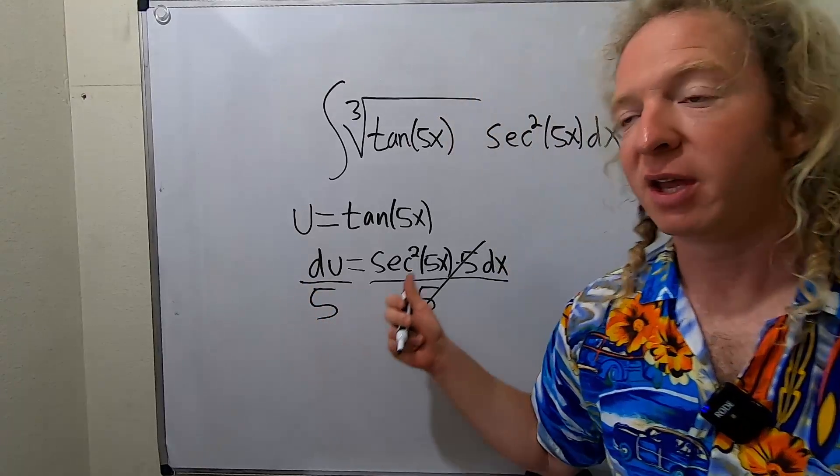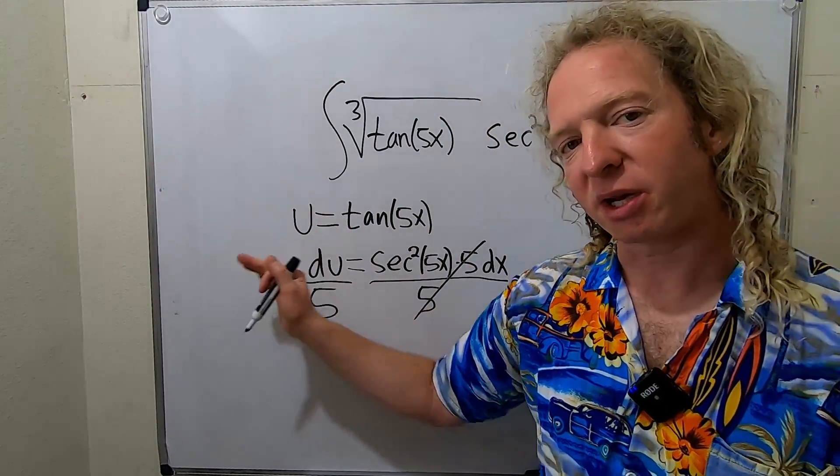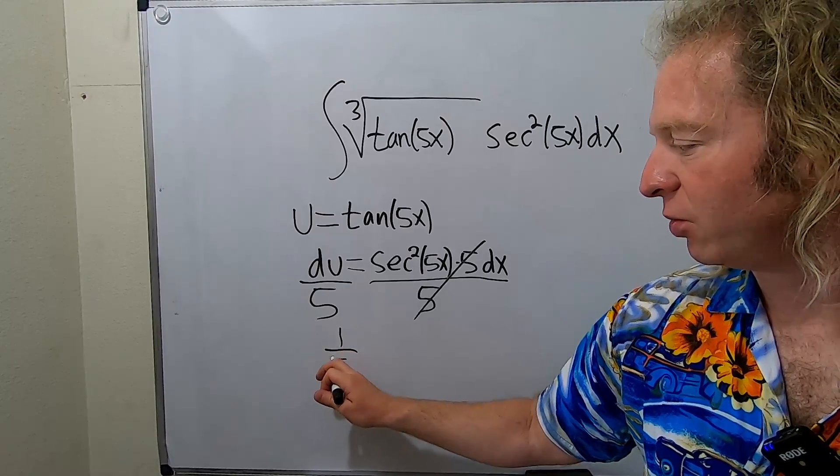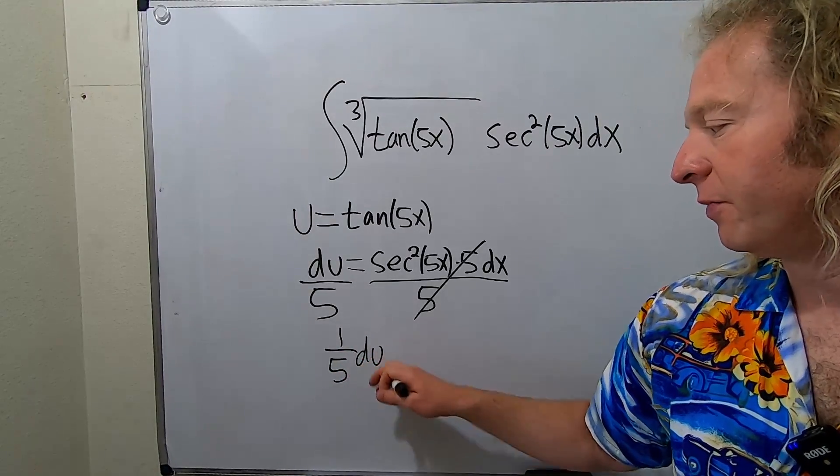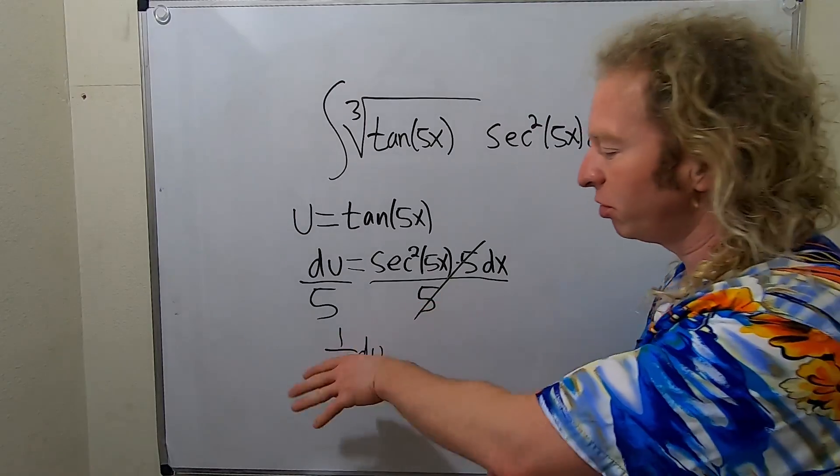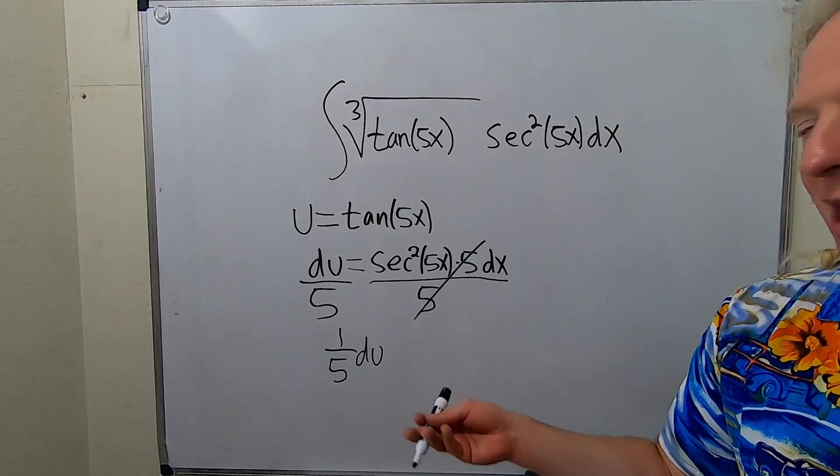So du over 5. Now we're going to end up pulling this constant out. So typically when you get to this step, what you do is you write it like this: 1 fifth du. That's just foresight. You do enough of these and you start to realize I'm going to end up pulling the number out. So it's just a good habit to get into.